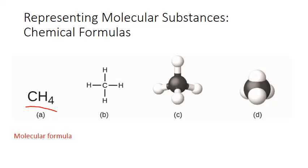How those carbons and hydrogens are bound together is represented in a structural formula. Structural formulas represent shared electrons as lines or dashes, and for methane the carbon is the center with those four hydrogens bound separately to it in four different covalent bonds.